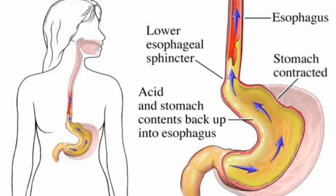Drugs that increase the barrier pressure — such as cyclizine, alpha-adrenergic agonists, anti-cholinesterase drugs, and metoclopramide — decrease the risk of reflux. On the other hand, tricyclic antidepressants, opioids, ethanol, thiopental, and anti-cholinergic drugs reduce the lower esophageal sphincter pressure and increase the tendency for gastroesophageal reflux.